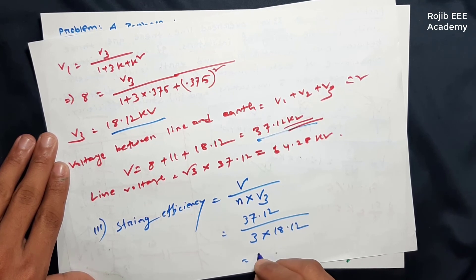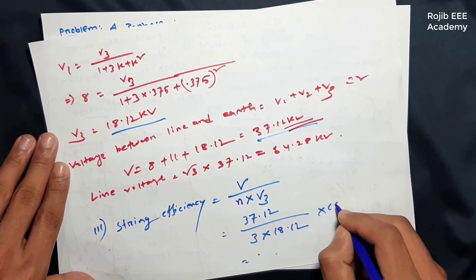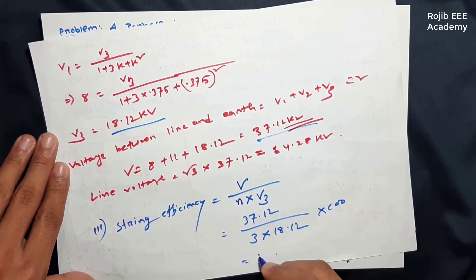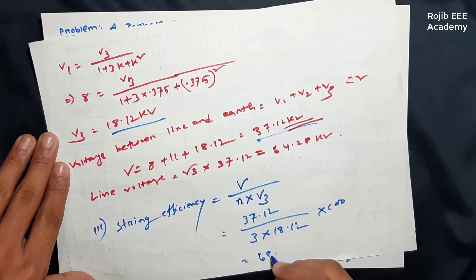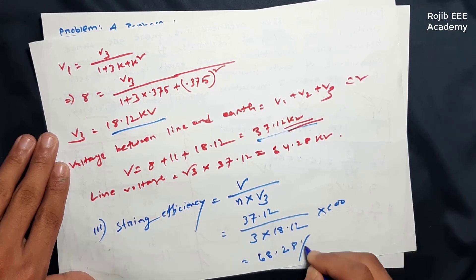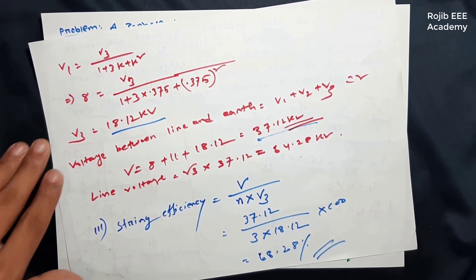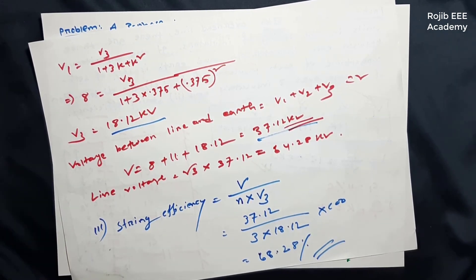If you have a string insulator, the string efficiency is 68.28 percent. Thank you, and see you next time.